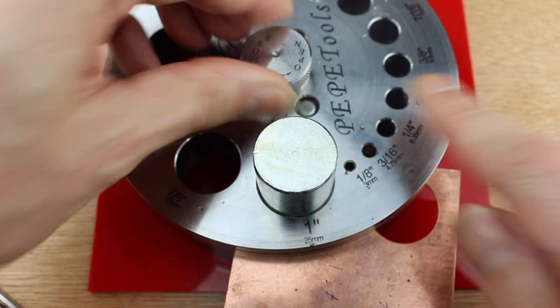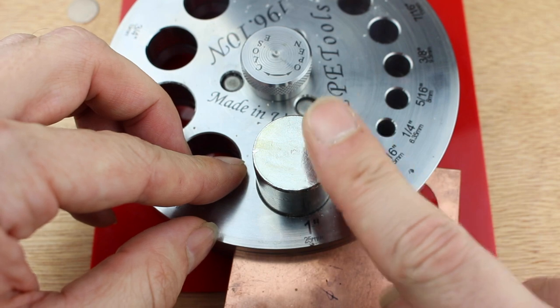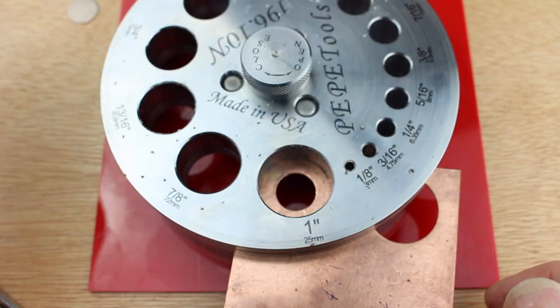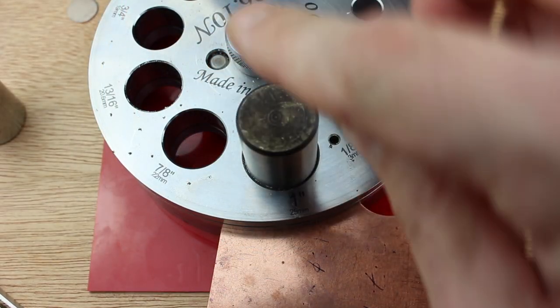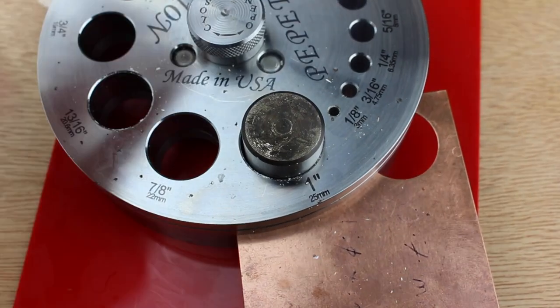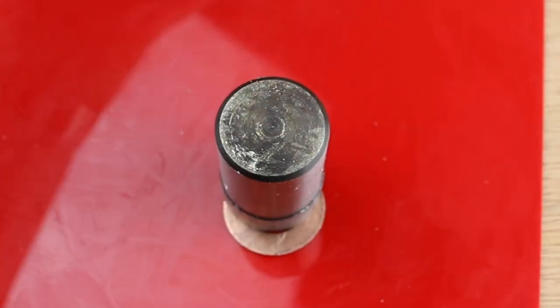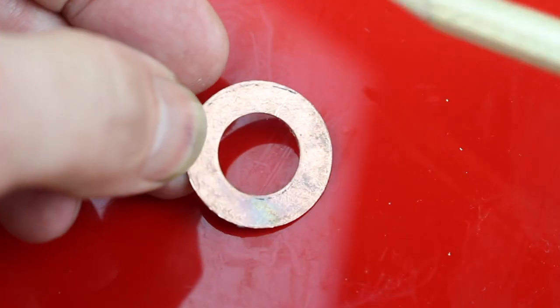Remove the die, insert the punch, and cut as normal. Your punch will go right through and you will have a perfect washer component with a uniform thickness all the way around. Simple as that, perfect results every time.